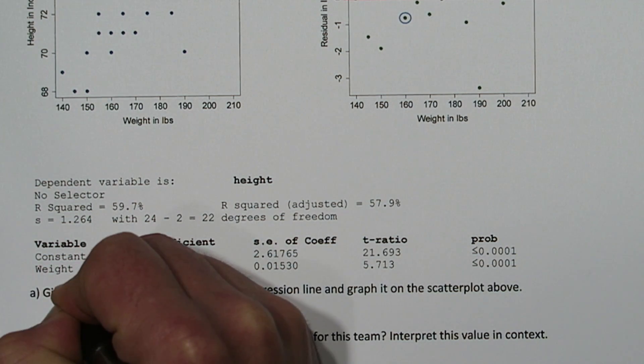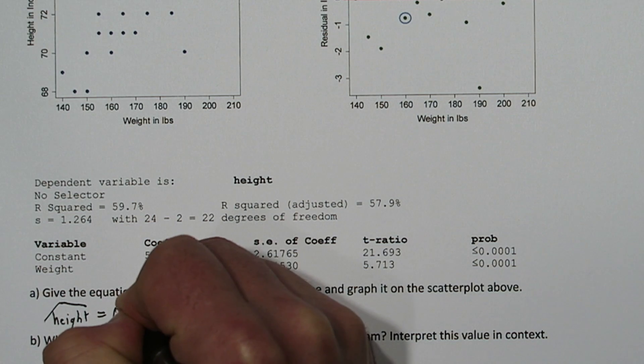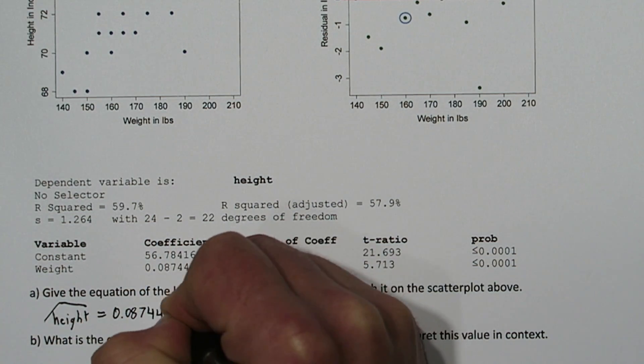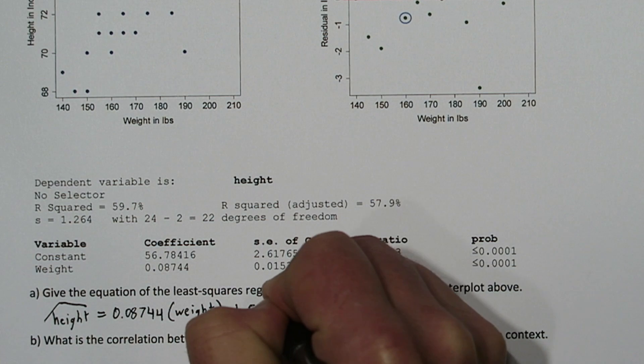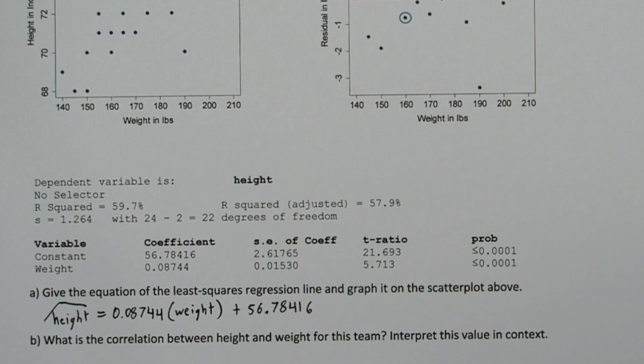So our least squares regression line equation is predicted height, or height hat, equals 0.08744 times weight plus 56.78416.